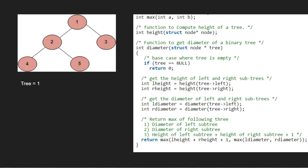As you can see, the left height of node 1 is 2, so lheight will be equal to 2. Now, rheight will be equal to 1 as the right height of node 1 is 1.